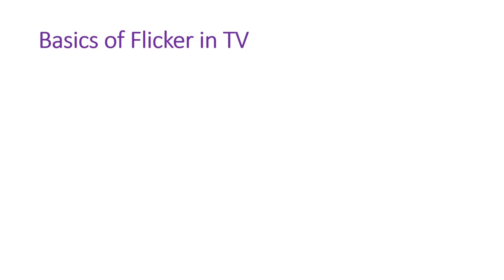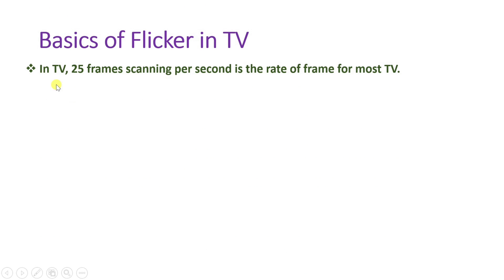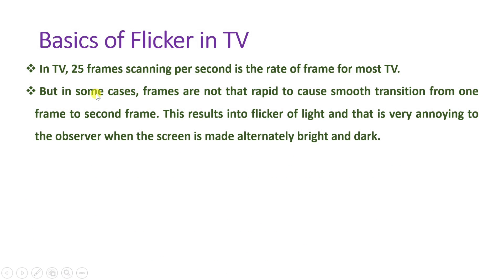Let us begin with the first agenda: basics of flicker in television. In television there are 25 frames per second in most televisions, and because of this 25 frames-per-second rate, in some cases rapid changes cause transitions that are not smooth from one frame to another, resulting in distortion.